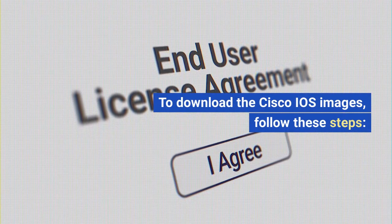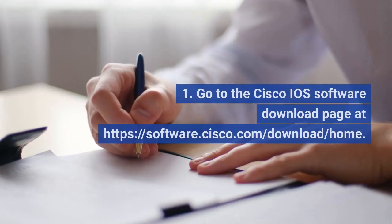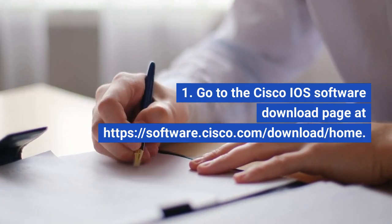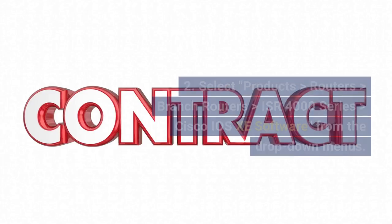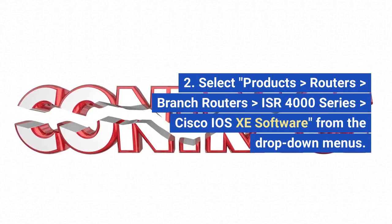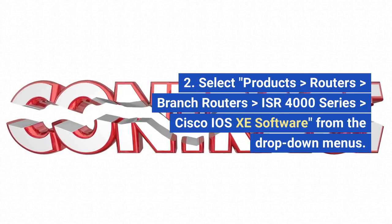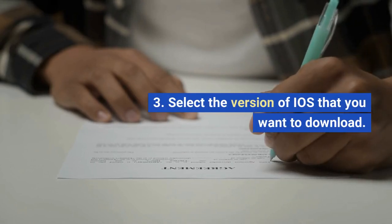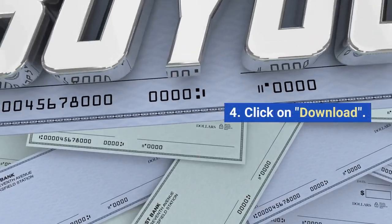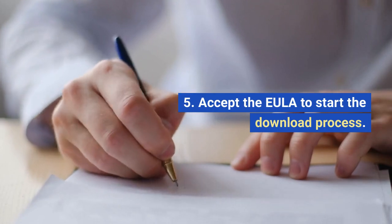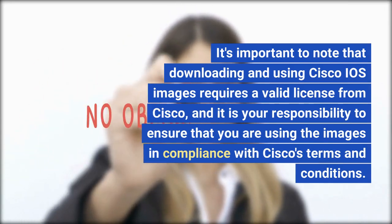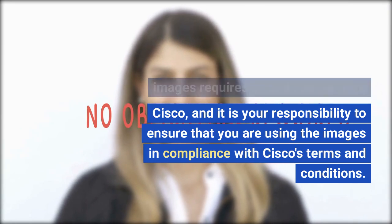To download the Cisco iOS images, go to the Cisco iOS software download page at software.cisco.com/download/home. Select Products > Routers > Branch Routers > ISR 4000 Series > Cisco iOS XE Software from the drop-down menus, select your desired version, click Download, and accept the EULA. Note that downloading and using Cisco iOS images requires a valid license, and you must ensure compliance with Cisco's terms and conditions.